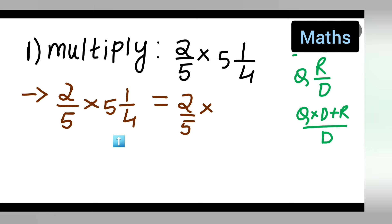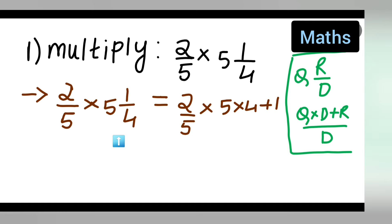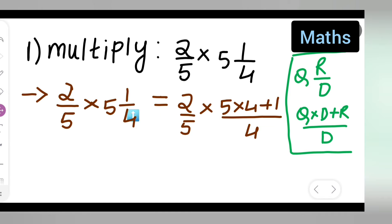You all are going to use this form. So, write down 5 multiplied by 4 plus 1 upon 4. Now, this is in the form of that rule — quotient is 5, remainder is 1, and dividend is 4. So, quotient multiplied with D is 4, plus remainder 1, upon D which is 4.